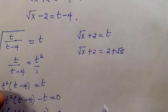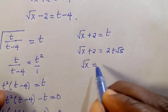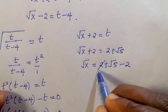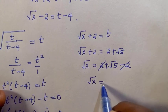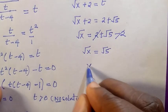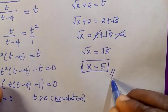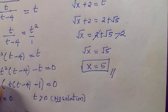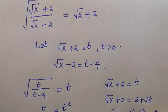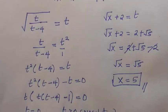Taking two to the other side gives root x equals two plus root five minus two. The two's cancel, leaving root x equals root five, so x equals five. The solution is x equals five. Note that we also check the negative case — two minus root five squared — but the negative is eliminated by the square. Thanks for watching and don't forget to subscribe.